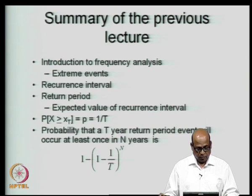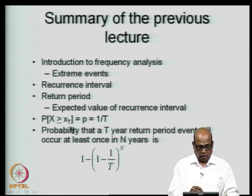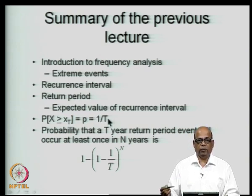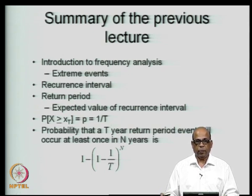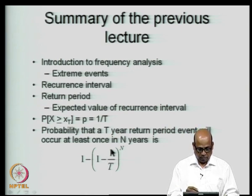We defined the probability of such an event as the probability of x being greater than or equal to x_t, where x_t is the magnitude of that particular flood, and this is given by p = 1/T, where T is the return period. We also showed that the probability that a T-year return period event will occur at least once in n years is 1 minus (1 minus 1/T)^n.